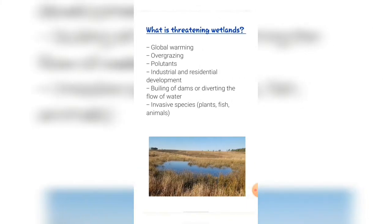What is threatening wetlands? Global warming is a threat to wetlands. The warmer the air temperature gets, the warmer the water temperature gets. Algae likes to grow in warm water, and the overgrowth of algae can block the wetland.